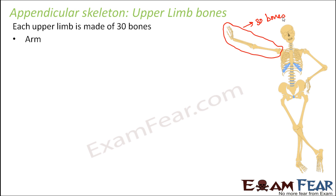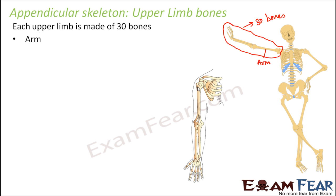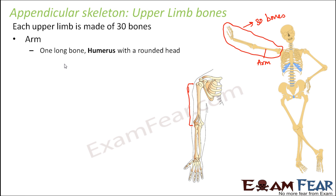First we will talk about the arm — this upper portion. This portion is made up of one long bone, a single piece called the humerus, with a rounded head. So this one is humerus and it has a rounded head, as you can see here.